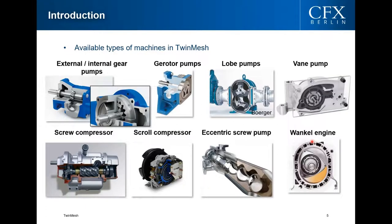Twin Mesh is currently available for different machine types. For pumps: external or internal gear pumps, G-rotor pumps, lobe pumps, and vane pumps. For compressors: screw compressors and scroll compressors. There are also more exotic types like eccentric screw pumps and Wankel engines — each sharing a topology that can be meshed with the Twin Mesh approach.